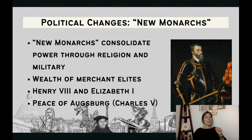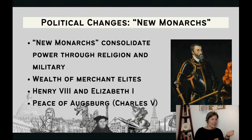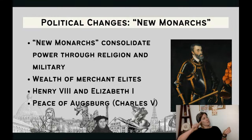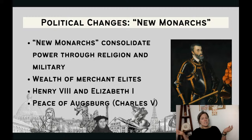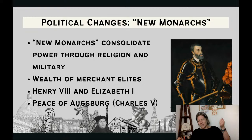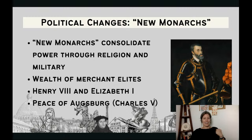The monarchs aren't the only ones gaining power — merchant elites also start to arise and control more wealth and power. The Medici family in Italy is a really good example. The CED wants you to know about Henry VIII and Elizabeth I as monarchs of England who consolidated their power through religion and the military — I'll talk about them more in a later unit.